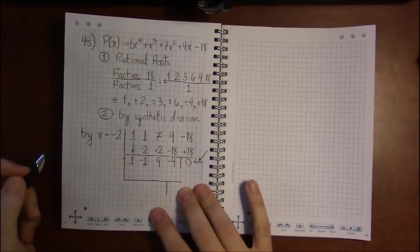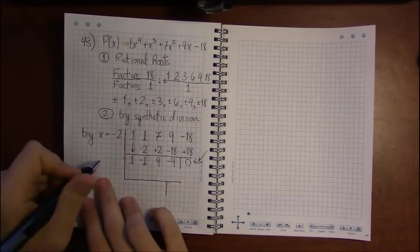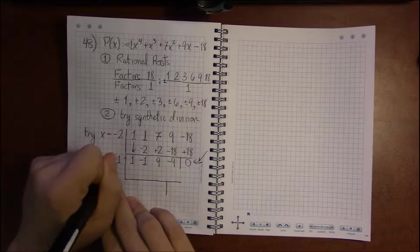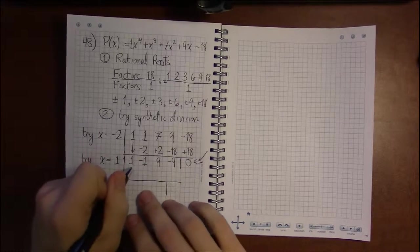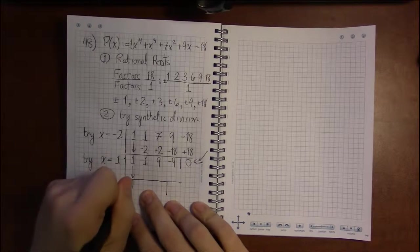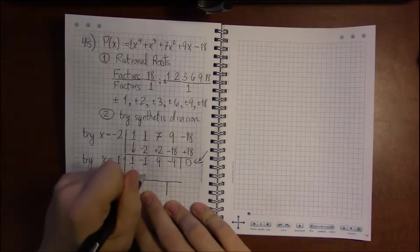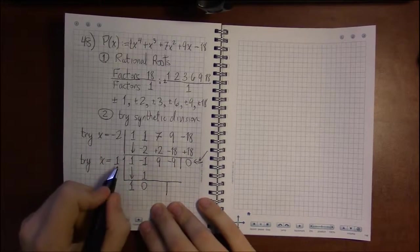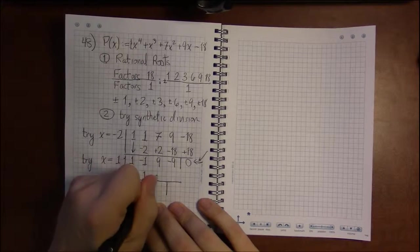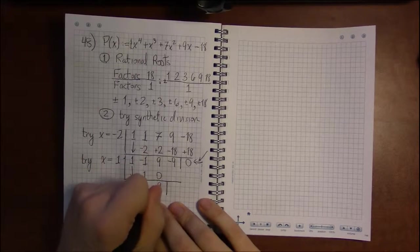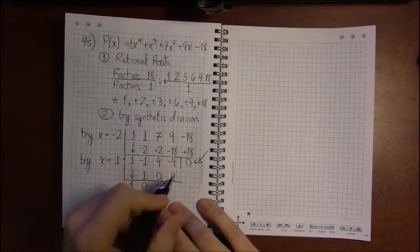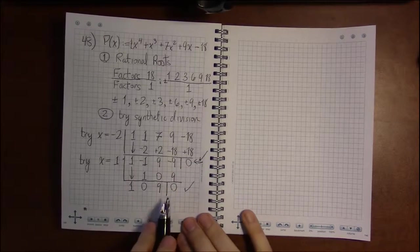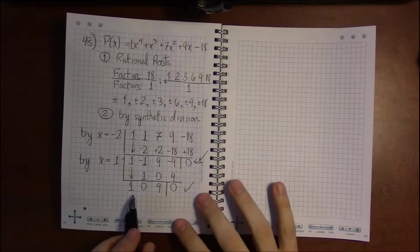Using my instructor's edition, I see that trying x equals 1 seems to be a decent choice. Drop the 1 again. 1 on the outside times 1 below is 1 above the line. Minus 1 plus 1 is 0. 1 times 0 is 0. 9 plus 0 is 9. 1 times 9 is 9. Minus 9 plus 9 is 0. Excellent. That's another 0.